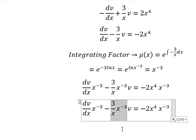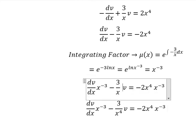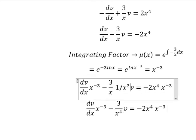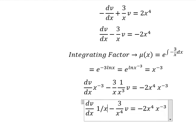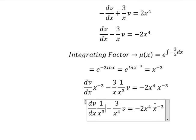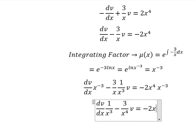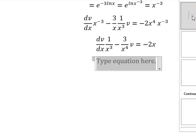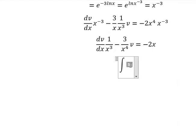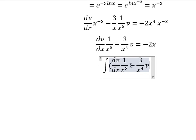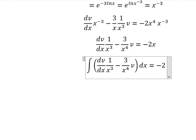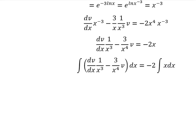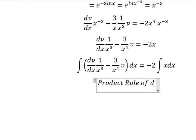This term becomes 3 over x to the power of 4, because this one is 1 over x to the power of 3. Similarly for this term — exponent 4 minus 3 gives us 1. Next, we integrate both sides.